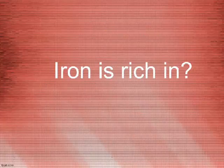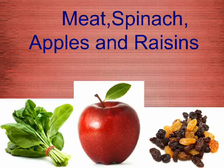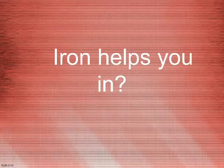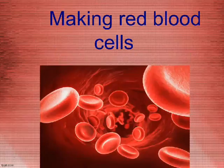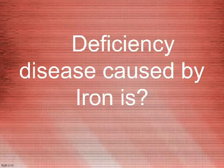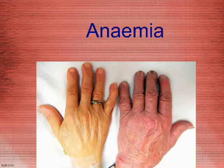Iron is rich in meat, spinach, apples, and raisins. Iron helps you in making red blood cells. The deficiency disease caused by iron is anemia.